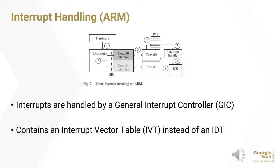Here, we can see a high-level overview of interrupt handling on a dual-core ARMv7 CPU. It's largely similar to the x86 diagram, except that it contains an interrupt vector table, or IVT, instead of the IDT. The IVT contains exactly one instruction to jump to a handler function, which then branches to the ISR. Additionally, interrupts are handled by a general interrupt controller, as opposed to the IO APIC we saw on the previous slide.